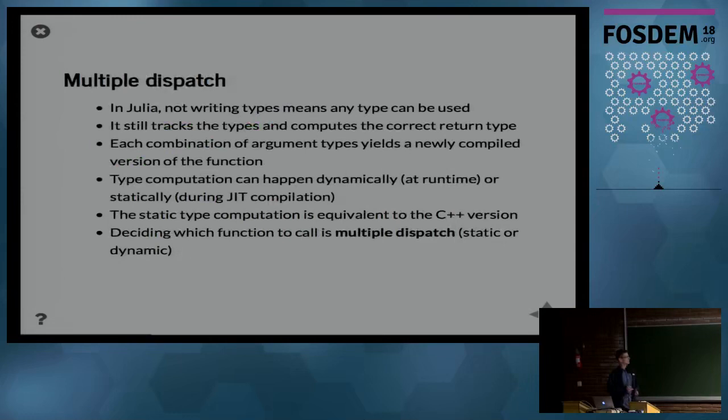In Julia, what the multiple dispatch mechanism means is that it will choose based on the types of arguments that you supply to the function. It will choose which function to call. It can do this statically just like in C++ template functions at compile time, in this case just-in-time compile, or it can do it dynamically if the type of the argument is not known at compile time. It will choose the function to call at runtime, a bit like a virtual function in C++.